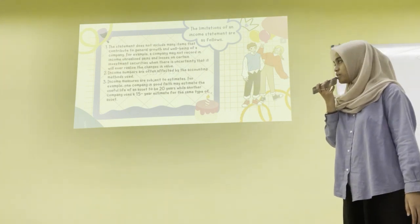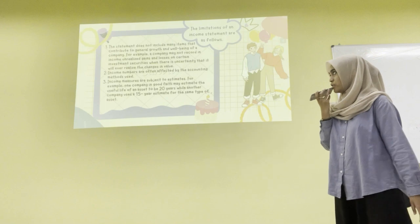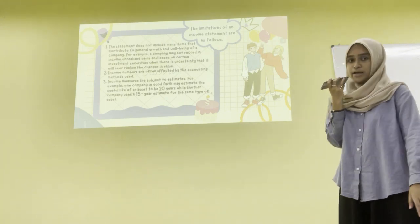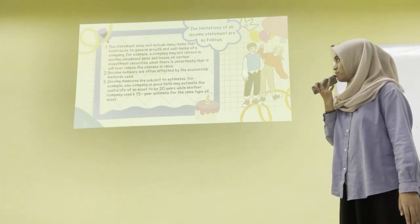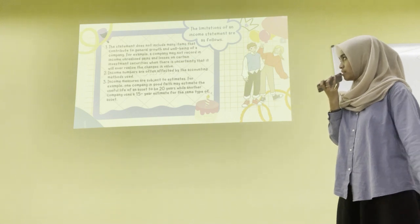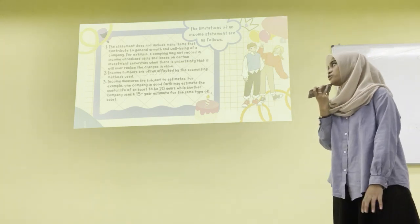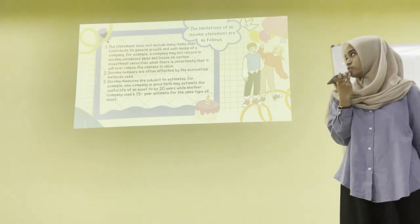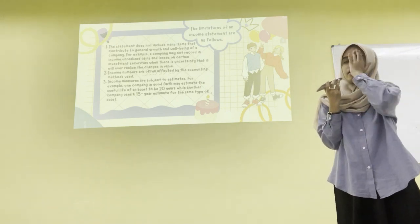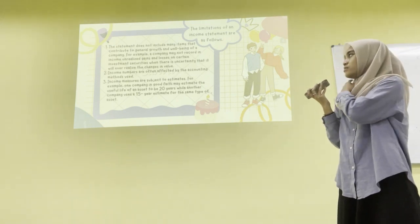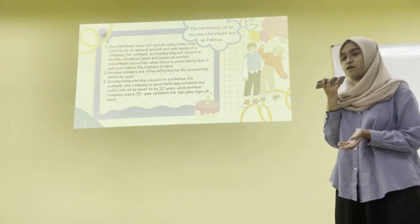The second limitation is that income numbers are often affected by the accounting method used. The third limitation is that income measures are subject to estimates. For example, one company in good faith may estimate the useful life of an asset to be 20 years, while another company uses 15 years for the same type of asset.